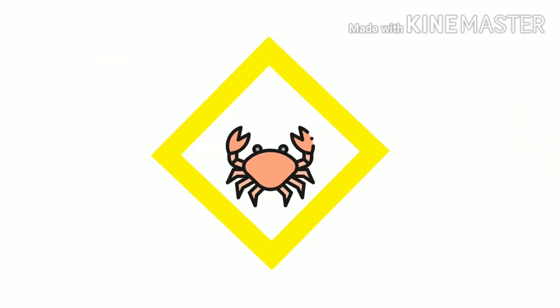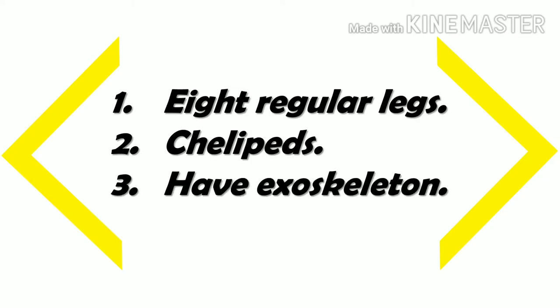Crab. Crabs have eight regular legs, calipeds, and an exoskeleton. All crabs have eight regular legs and two specially adapted legs known as calipeds or claws. These calipeds have several important uses: they help crabs feed and catch prey, and are also useful when fighting and defending themselves from predators.